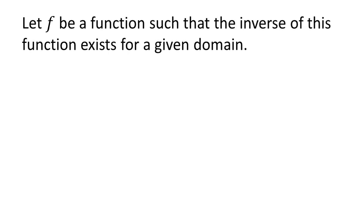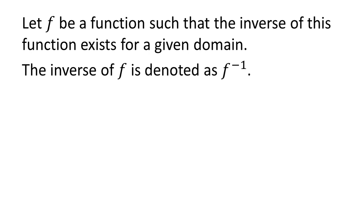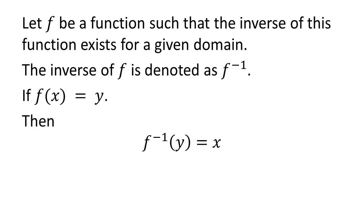Before finding the value of cosine of arccotangent of x, let's first know the properties of inverse functions. Let f be a function such that the inverse of f exists for a given domain. The inverse of function f is denoted by f to the power minus 1. If at point x the value of function f is y, so f of x equals y, then the inverse of f of y equals x.